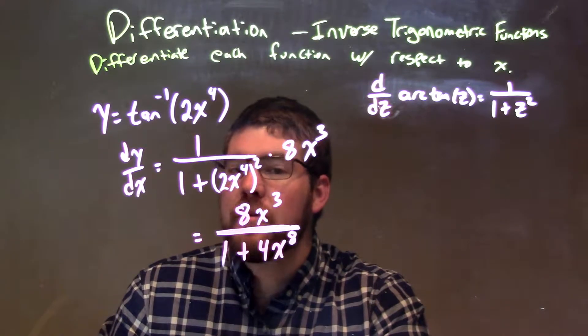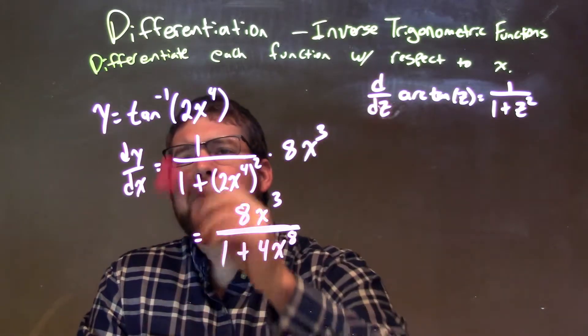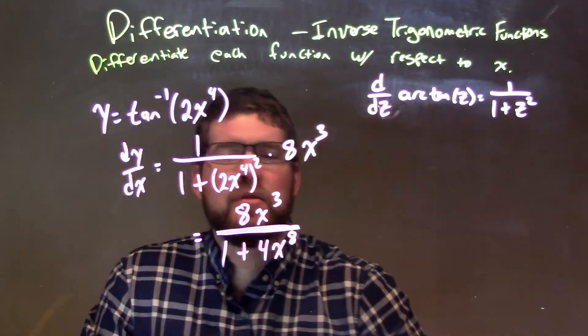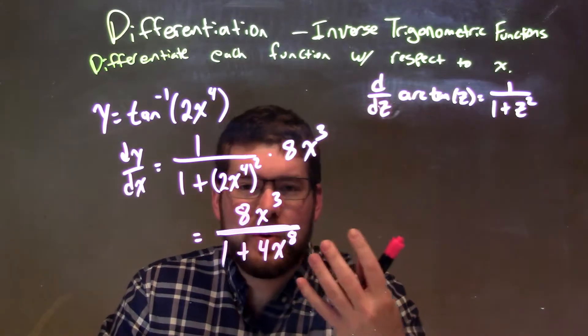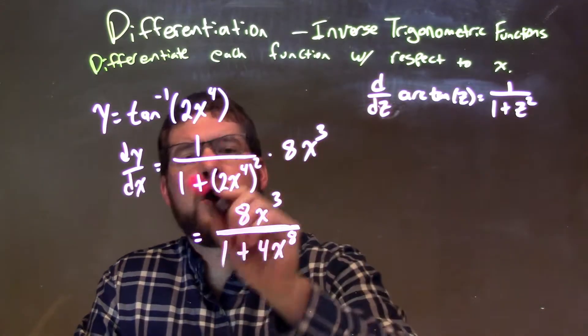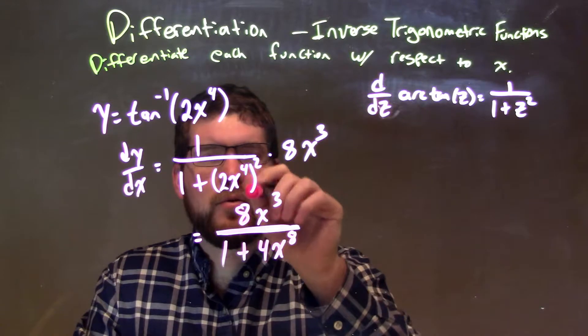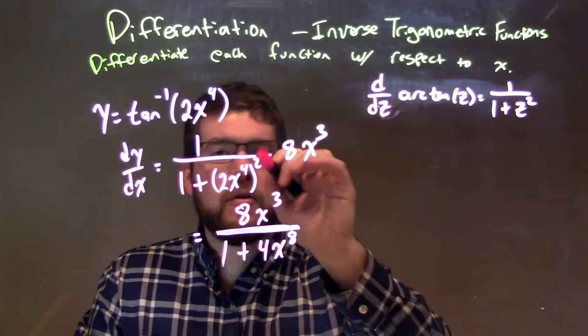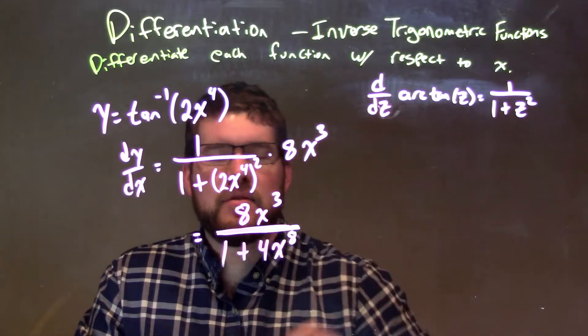So let's recap. We're given y equals the arctan of 2x to the fourth power. By applying our rule of the derivative of arctan, we have 1 over 1 plus 2x to the fourth squared times the derivative of that inside, which is 8x to the third power.